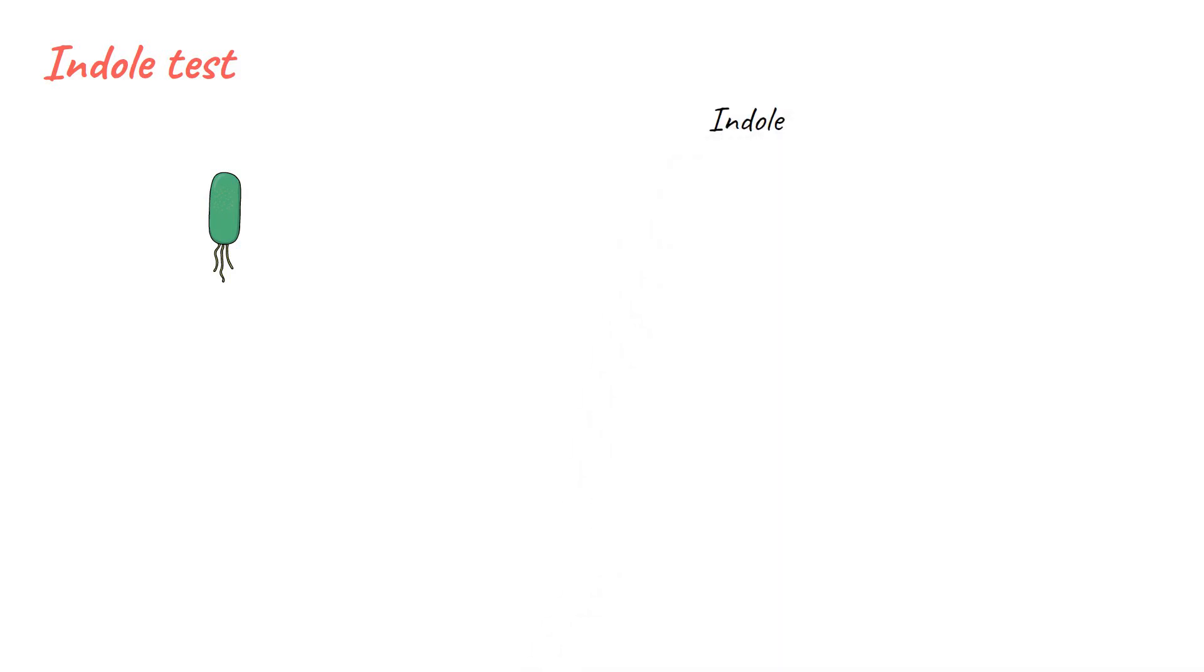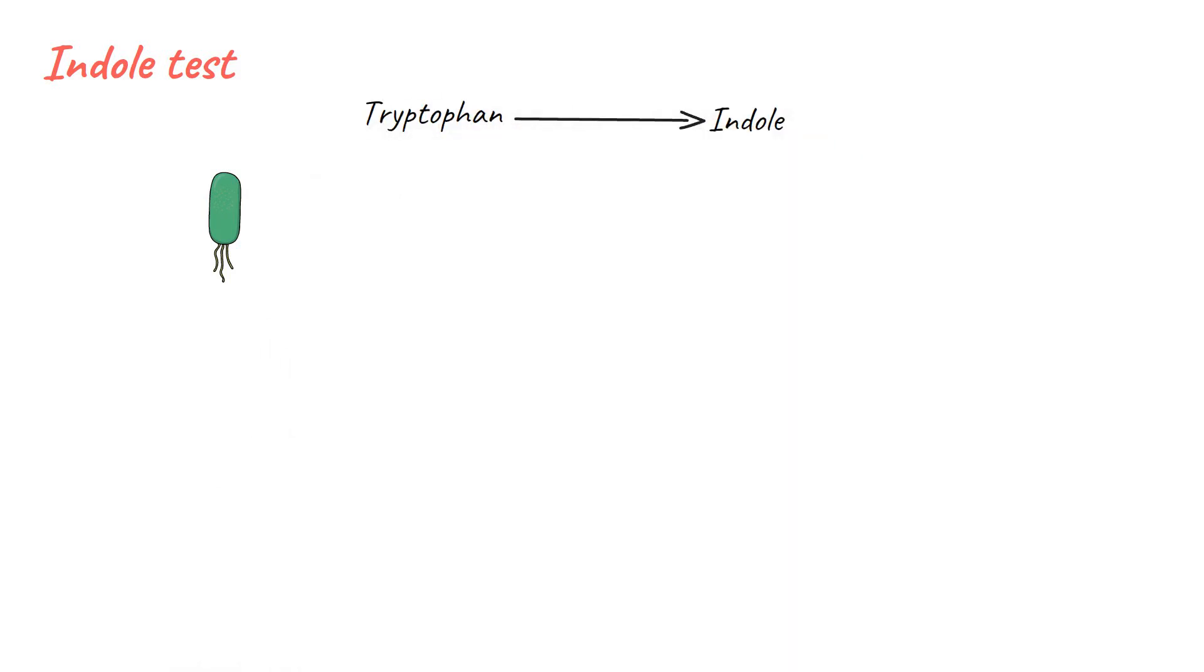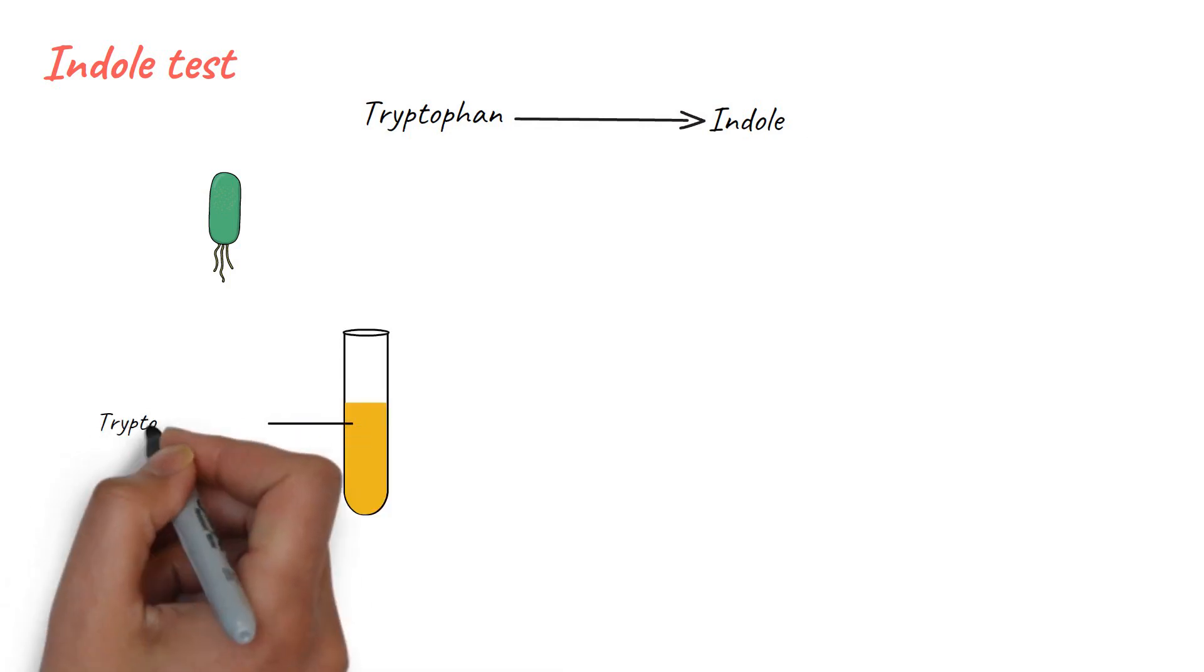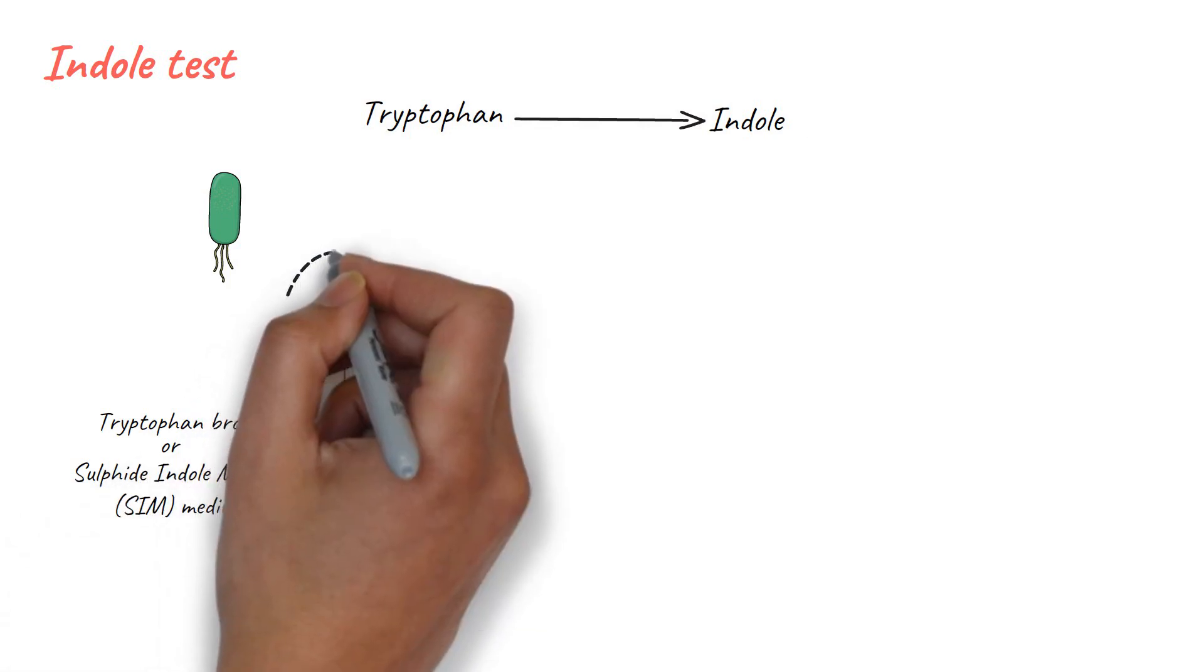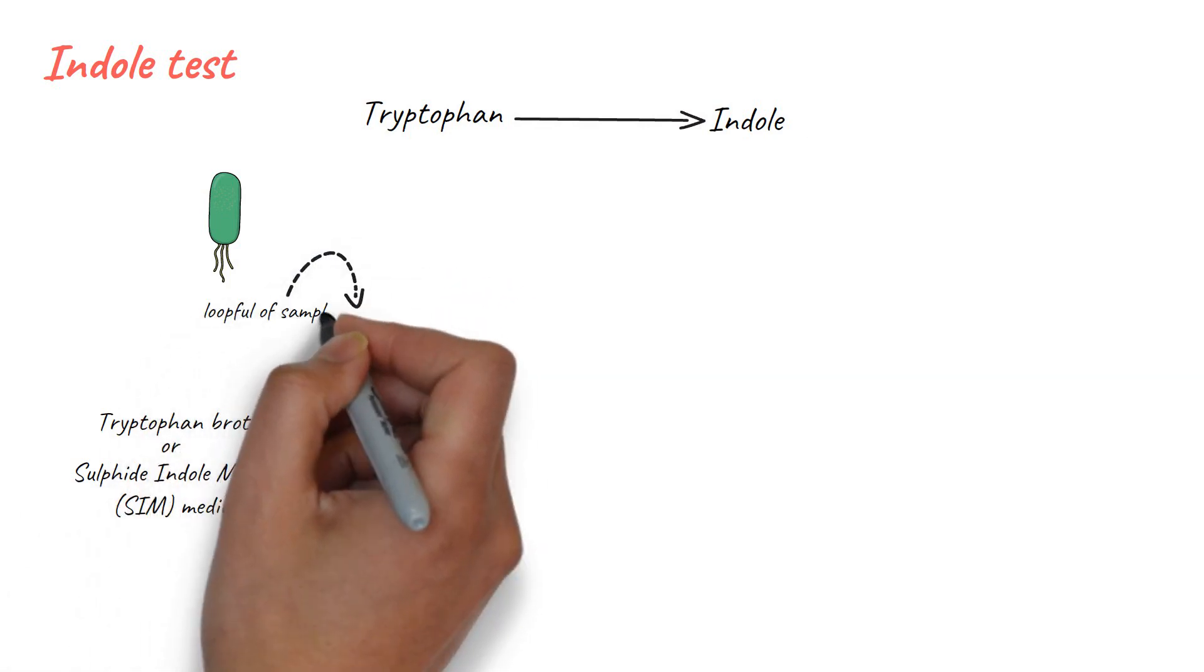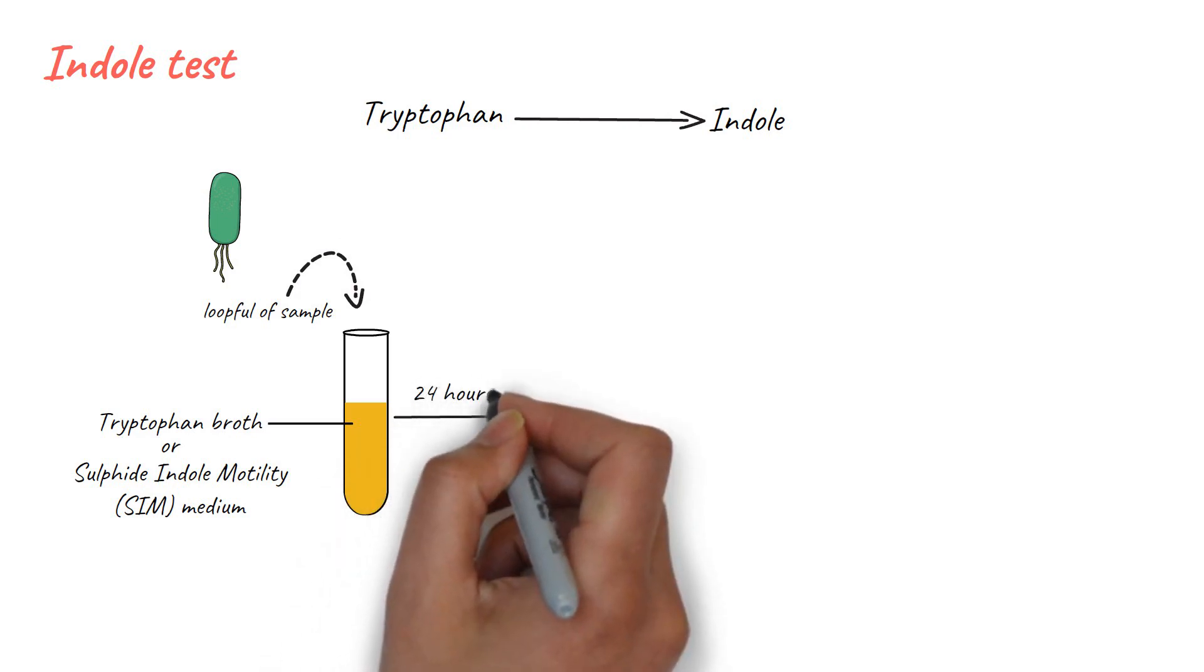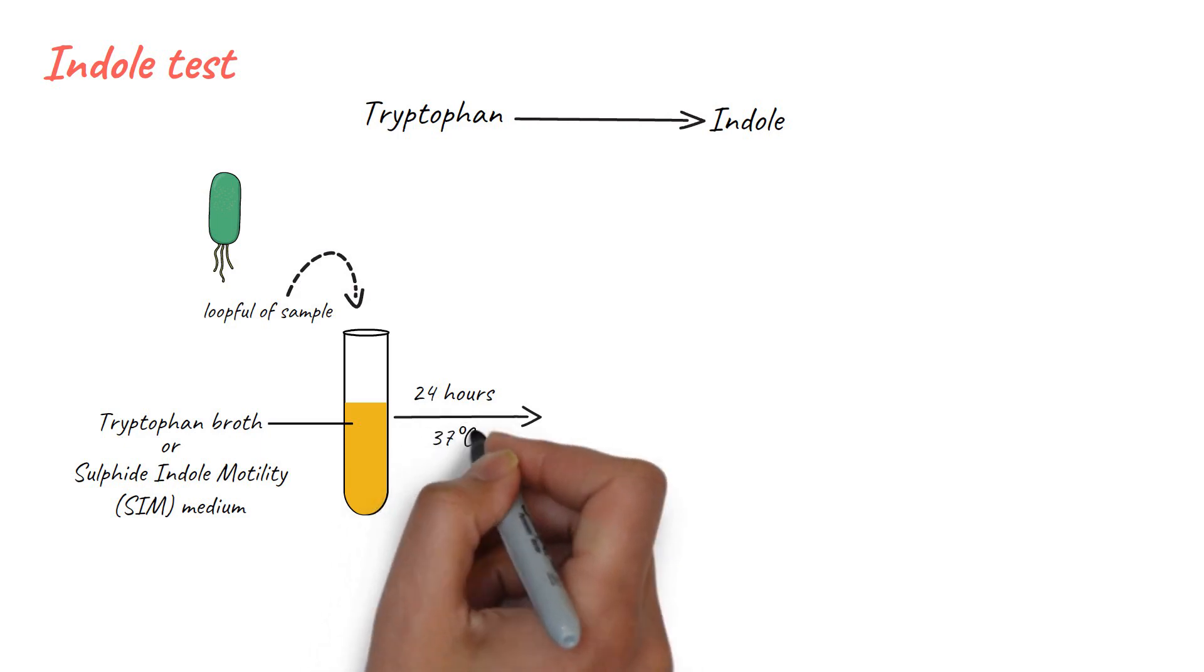The purpose of the indole test is to detect the ability of bacteria to produce indole from the amino acid tryptophan. To perform this test, take a test tube containing tryptophan broth or sulfide indole motility medium. Inoculate the tube with a loopful of sample and incubate the tube for 24 hours at 37 degrees Celsius.